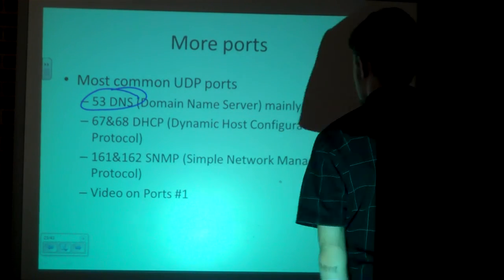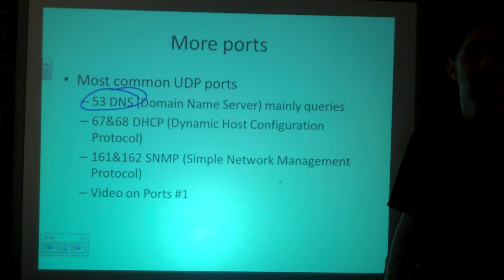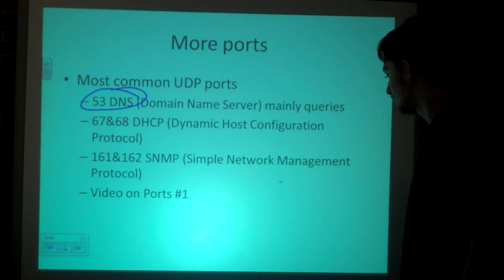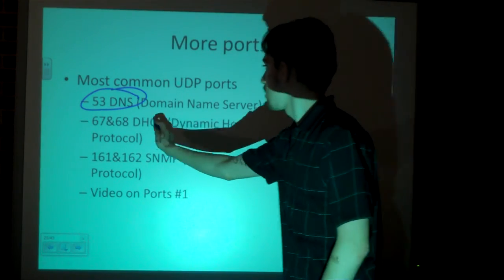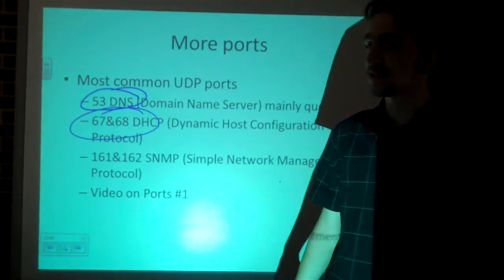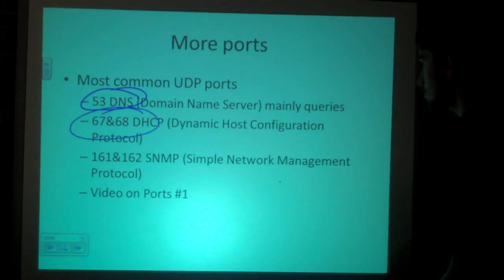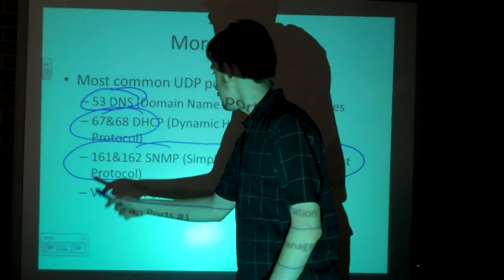Then you have DHCP — which I'm a big fan of, because I don't want to sit at every computer and configure IP addresses for each one. DHCP goes over ports 67 and 68 on UDP. Then there's SNMP, which is used to map your network.